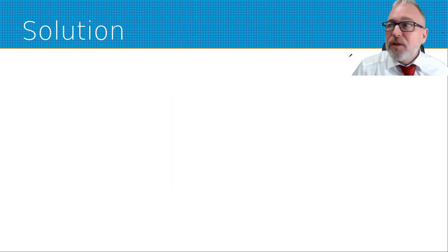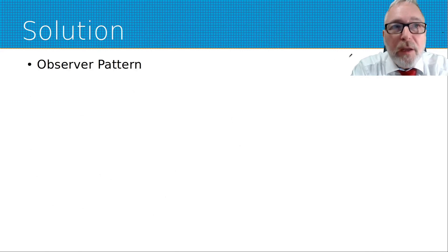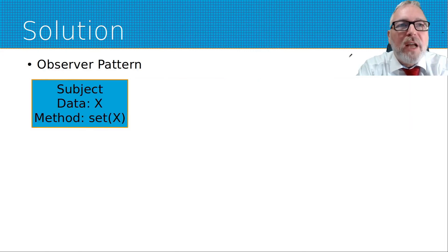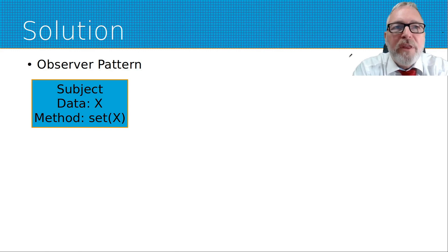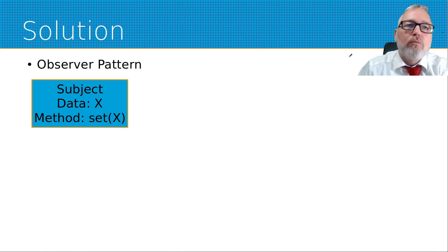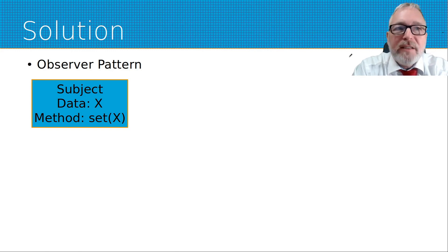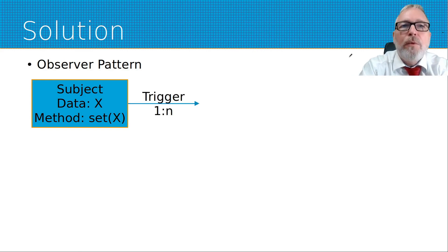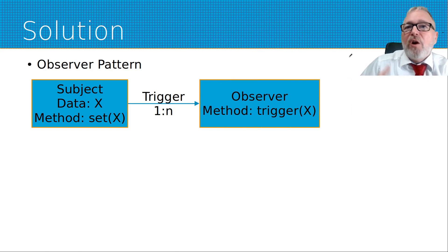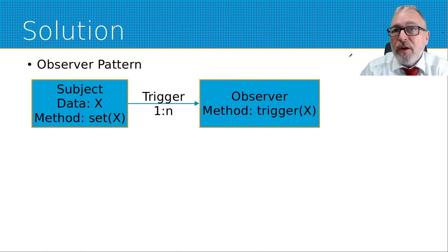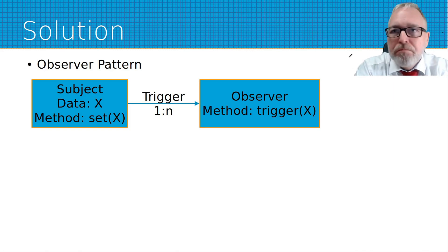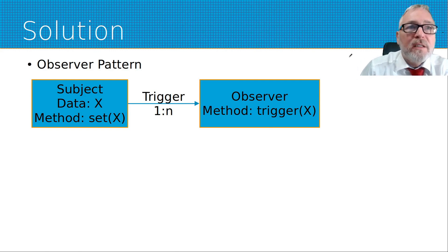What is the solution? For the solution we use an observer pattern. A short introduction: we have a subject, the subject contains data X, and we have methods to change the data within the subject. Every time you change the data with those methods, the subject recognizes that data X has changed, calls a trigger function, and that trigger function is connected to the subject. The subject calls the observers and tells them: the data has been triggered, here is the data — do something. That is the observer pattern.